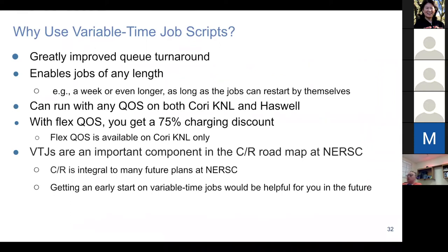Variable time job scripts provide improved queue turnaround and enable jobs of any length — even months-long jobs are possible. The requirement is the job must be able to restart by itself. These variable time jobs can run with any QoS, both on KNL and Haswell, but with flex QoS you can get a 75% charging discount. Flex QoS is available on Cori KNL only.